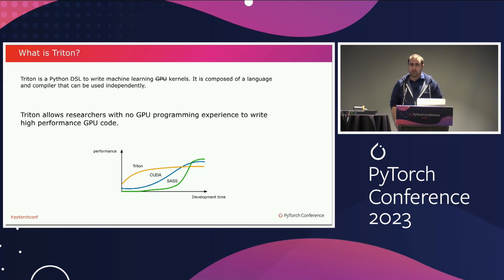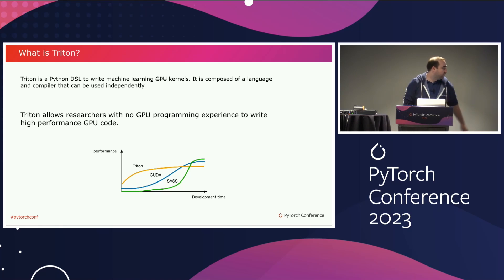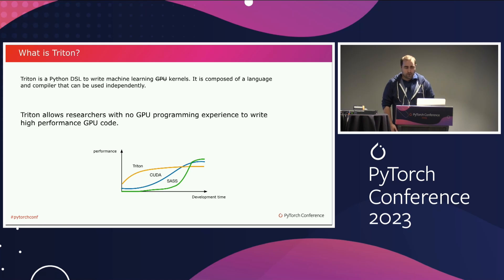That includes CPU, ASICs, anything. The goal of Triton is to allow researchers with no GPU experience or GPU knowledge to be able to write high performance code. As the graph at the bottom of the slide shows, that's really where Triton aims to be — with a low amount of development you can actually get really close to peak performance.